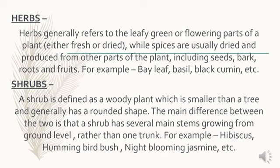Herbs generally refers to the leafy green or flowering parts of a plant, either fresh or dried. Wild species are usually dried and produced from other parts of the plant, including seeds, bark, roots, and fruits. Those plants have green and tender stems which are small. Examples include bay leaf, basil, and black cumin.